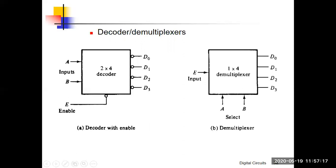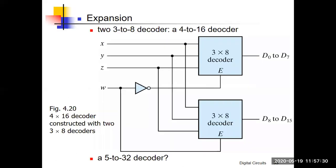A demultiplexer is a decoder with an enable bit — they are the same thing. If we have one enable bit with two select inputs, we call it a demultiplexer and get four output combinations. If we have two enable bits, we can generate more outputs or combinations.